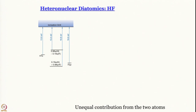We can have unequal contributions from the two atoms, which leads to polar covalent bonds, as we are going to discuss. From high school you would have studied polar covalent bonds — HF, OH in water — all these are polar covalent bonds, and this is how polar covalent bonds show up in an MOT treatment.